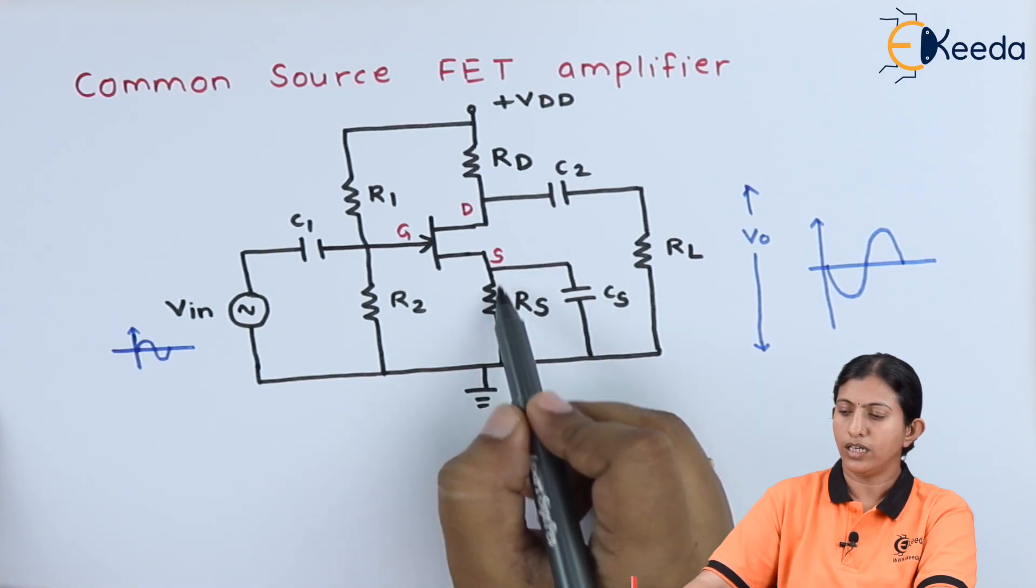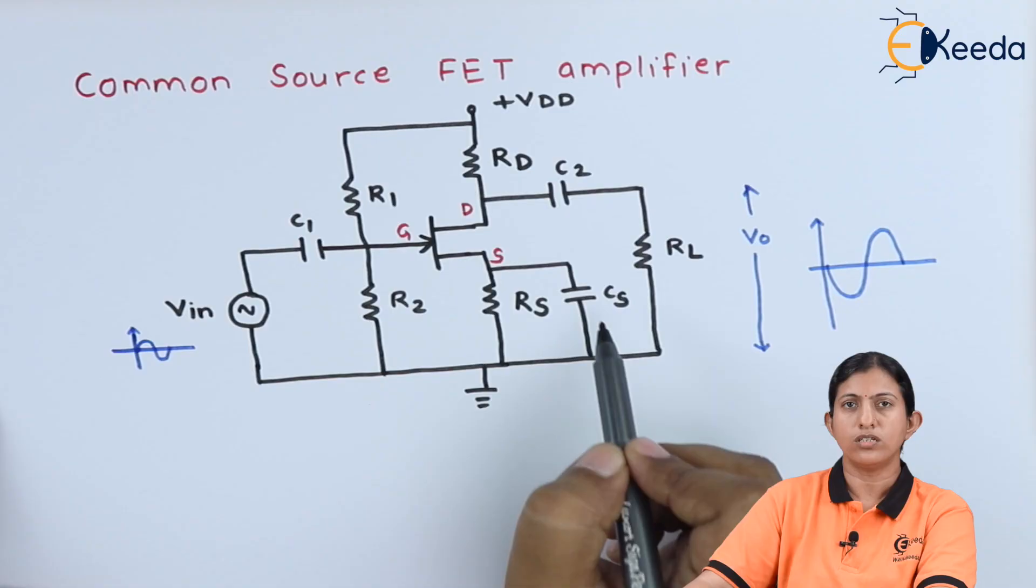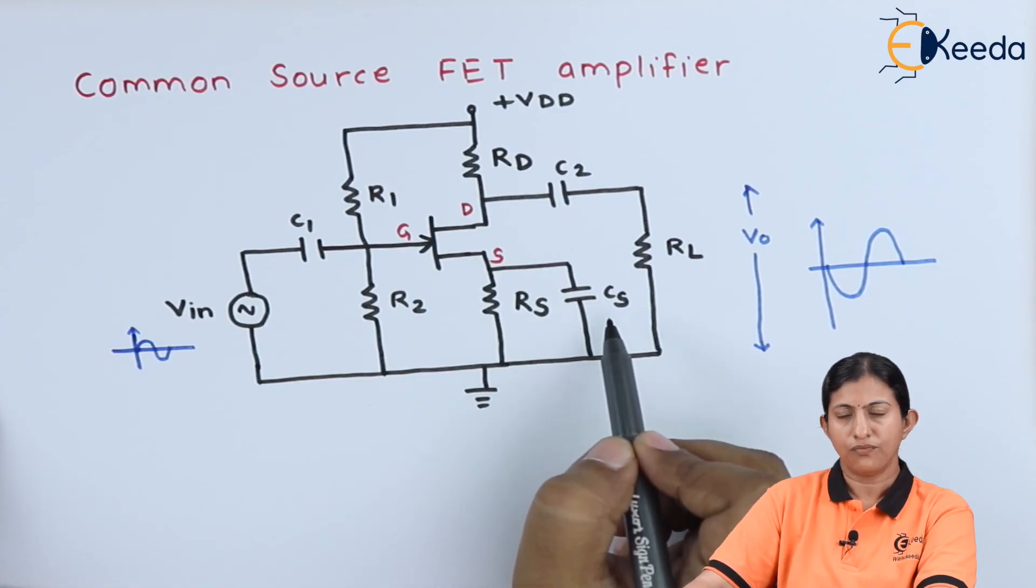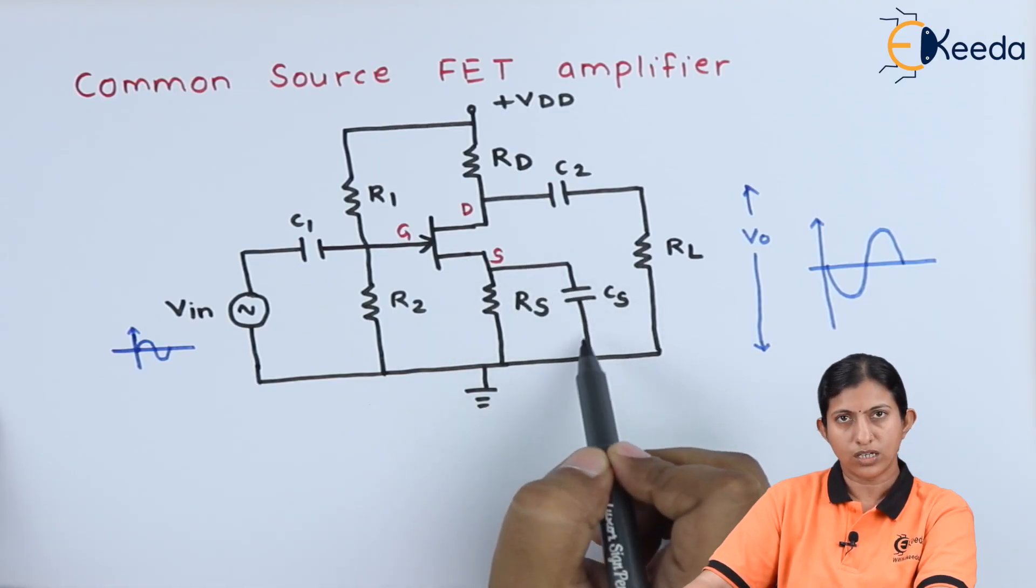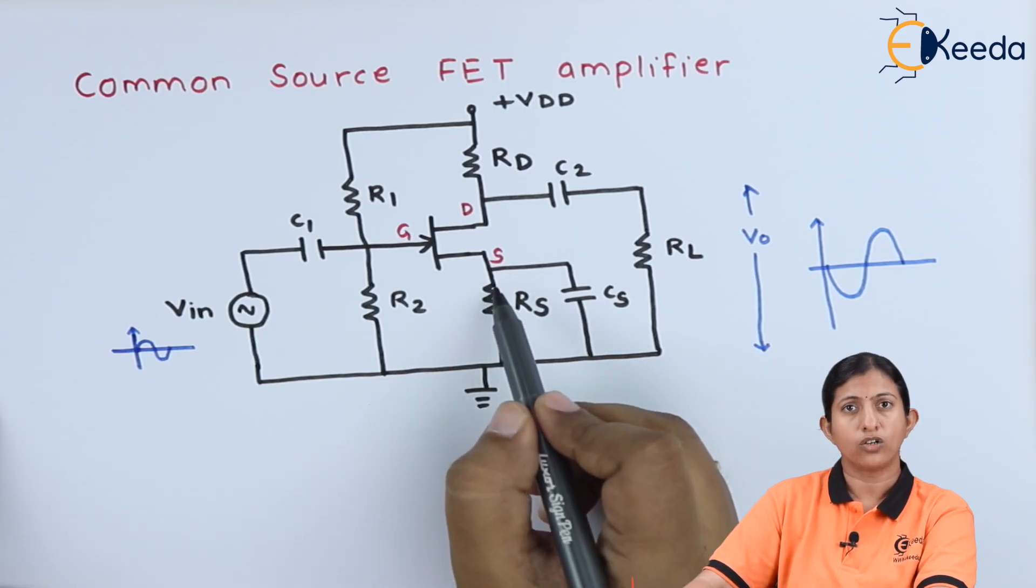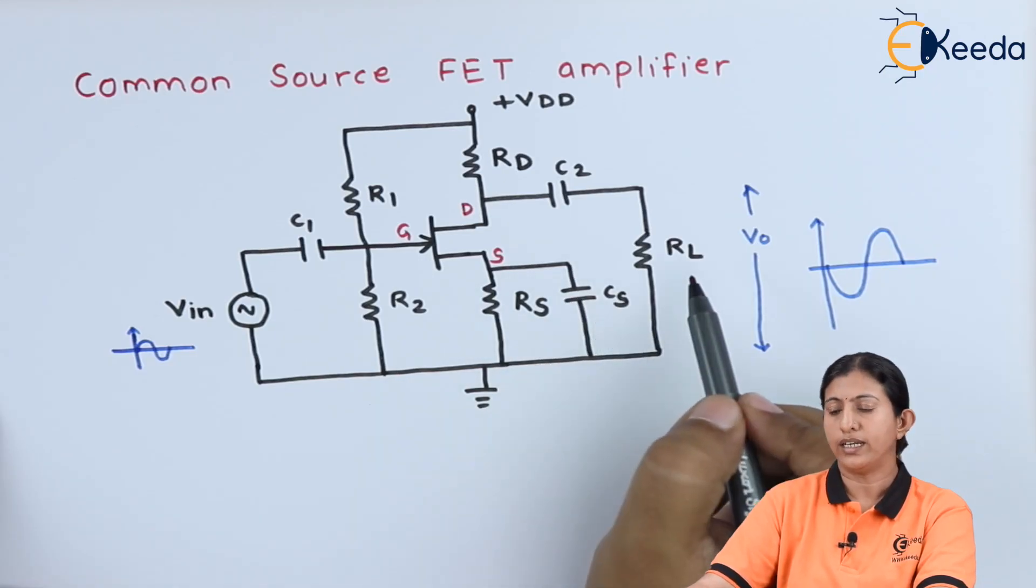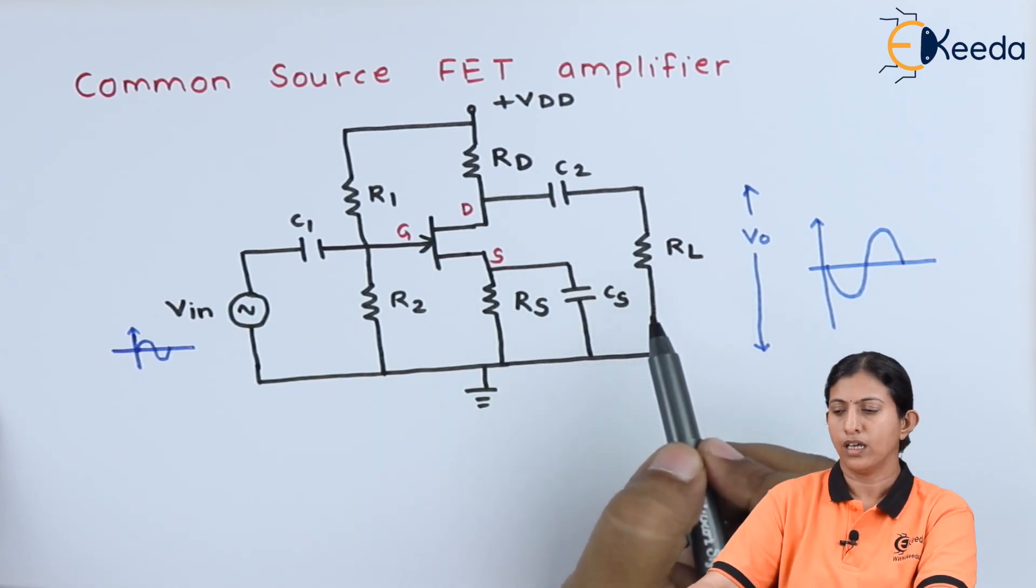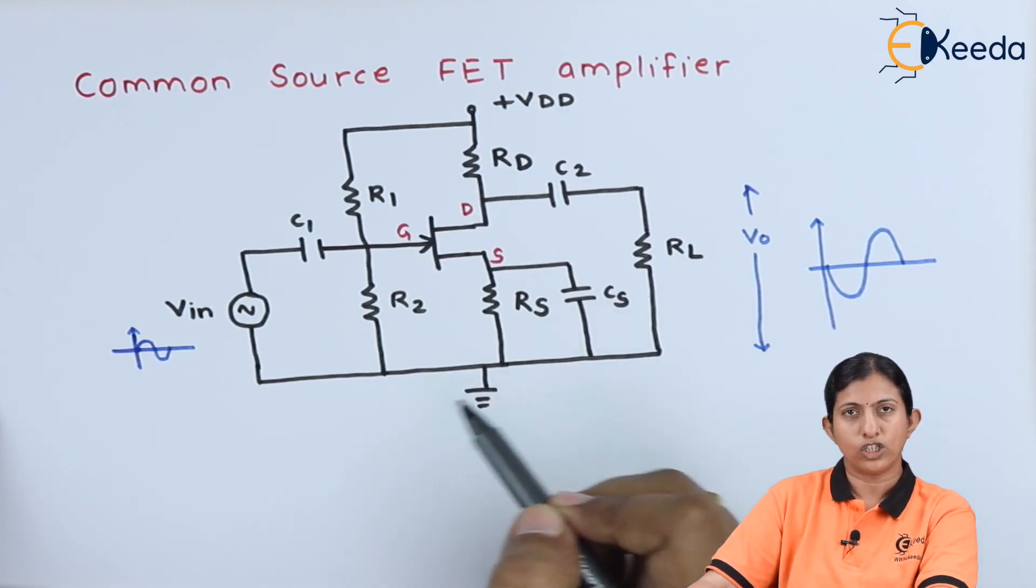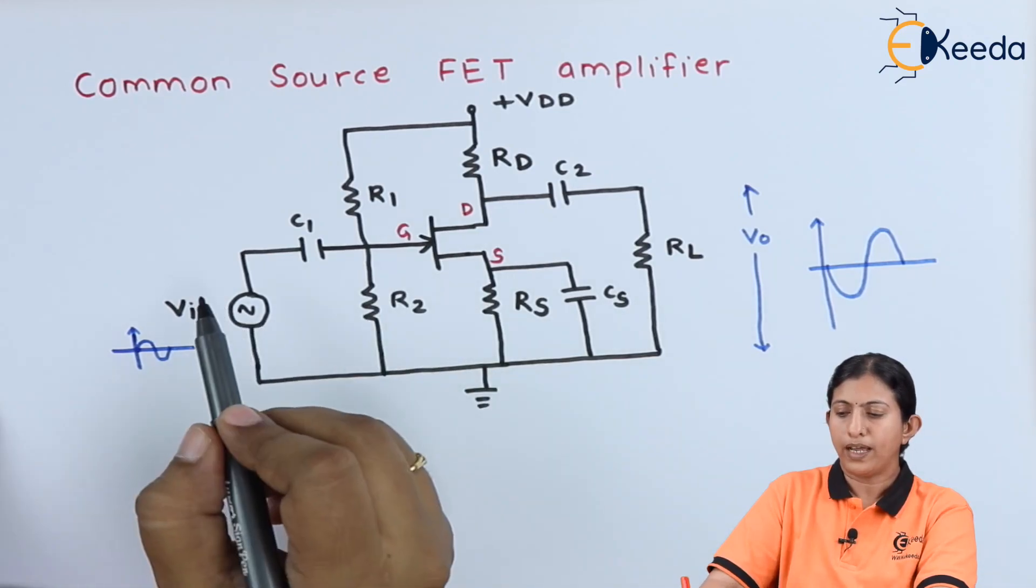It is connected across the resistor RS, so this is known as a source bypass capacitor which bypasses the source current to the ground. Because of that, there is less voltage drop across the source resistor, and it increases the voltage gain at the output.